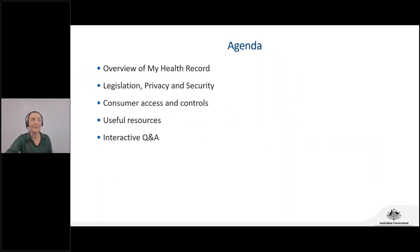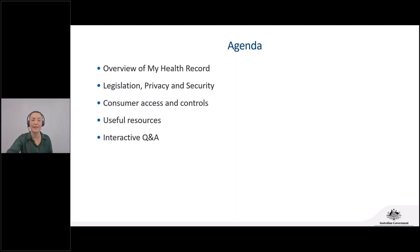Now for today's agenda. First, we're going to do a brief overview of My Health Record — what it is and the types of information it contains. We'll then look at how the system is protected by legislation and some of the cybersecurity features. We'll move on to how you can manage your record's privacy and access settings, share some helpful resources including recordings and modules, and then answer questions at the end.